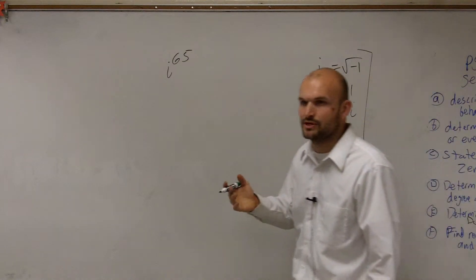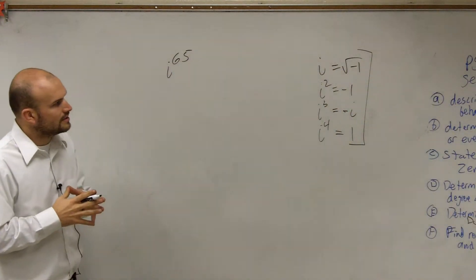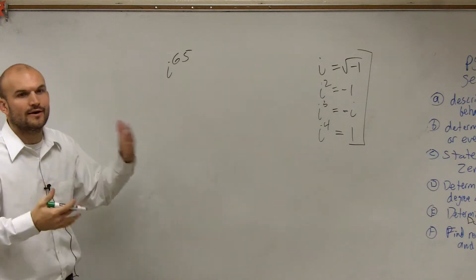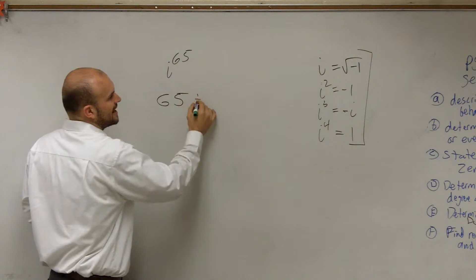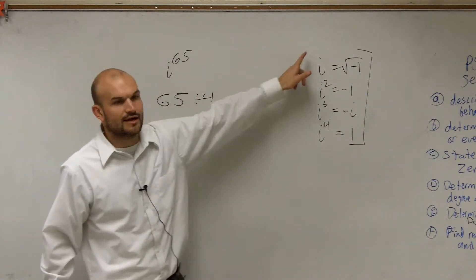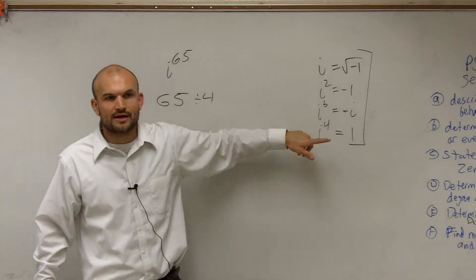So to figure out, every single time we go to i to the fourth, it repeats. So what we want to do is we want to take out all those repetitions. So what we do is we say 65 divided by 4. Because you look at that remainder, after it gets up to an exponent of 4, it goes back repeating again.